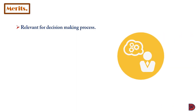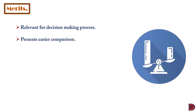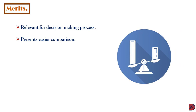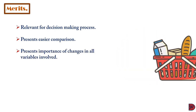Now let's look at the merits of using index numbers. First, it helps in decision making — once you know the position of one year relative to another in terms of changes, you can make findings about what necessitated that change. Second, it presents easier comparison: since the base is denoted by 100, a result above 100 easily indicates an increase, and below 100 indicates a decrease, before you start investigating the causal effect.